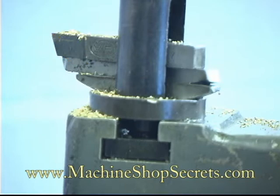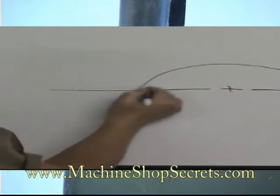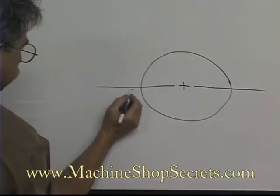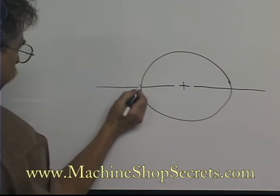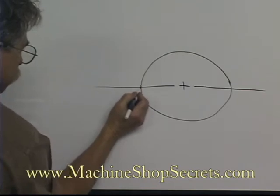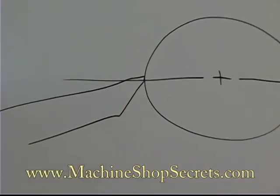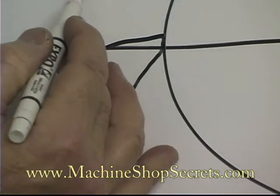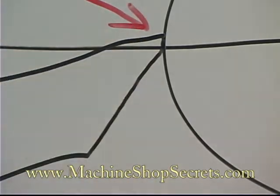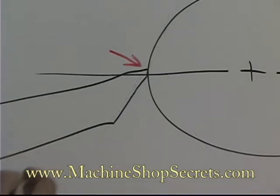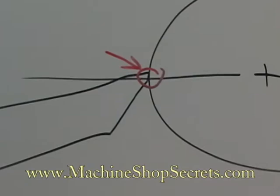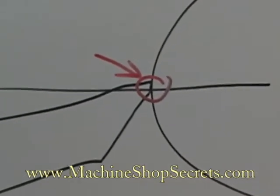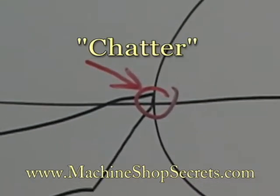Each time you change a tool, you want your tool to contact the workpiece just slightly below centerline or right on centerline. If the tool is above centerline at all, it will flex down towards the centerline under the pressure of the cut. This will cause the tool to pinch and dig in, and it's also rubbing somewhat — likely to create what's known as chatter.